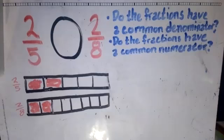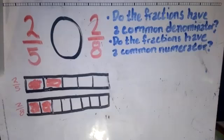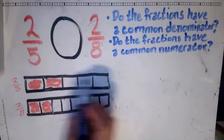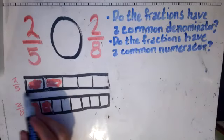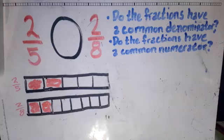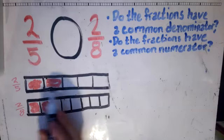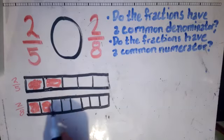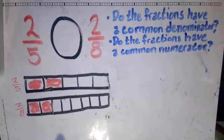But the pieces are different. For 2/5, we only needed to fit five pieces into our whole. Whereas for 2/8, we had to fit eight pieces into the whole. And what that meant is the more pieces we needed to fit, the smaller each of the pieces were.